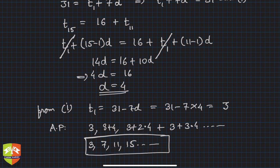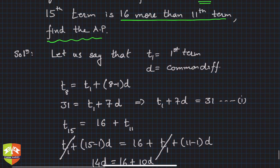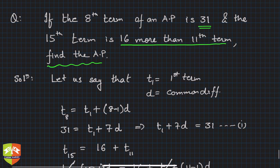So you just need to find out the first term and the common difference, and you will get the AP. And how to find first term and common difference? Through the given relationships in the question.